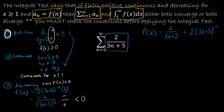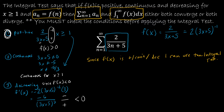I have checked all three conditions, so since f(x) is positive, continuous, and decreasing, I can use the integral test. The integral test says both the series and the integral will have the same convergence or divergence, so I'm going to evaluate the integral from 1 to infinity of 2 over (3x + 5) dx and determine if that converges or diverges.